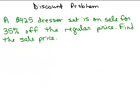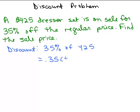So let's do this discount problem. A $425 dresser set is on sale for 35% off the regular price. Find the sale price. There are a couple ways you could do this. But a common way is to simply take the 35% off of the regular price. So that would be your discount, how much you get to take off. So we would have to do 35% of 425 to figure that out, which is 0.35 times 425.